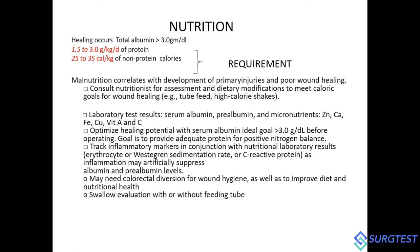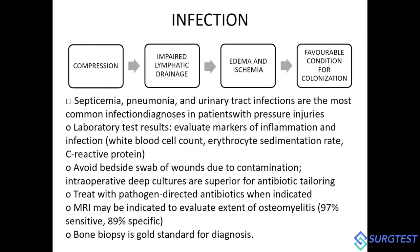For frequent soiling, a colorectal diversion may be needed for wound hygiene, either as a permanent solution or a temporary colostomy that can be reversed. If the patient is not taking adequate diet, swallowing evaluation can be done. Bed-side wound swabs should be avoided as they give mixed culture growth; instead, cultures should be done in a sterile operating theater setting, and required pathogens should be treated according to culture sensitivity reports.